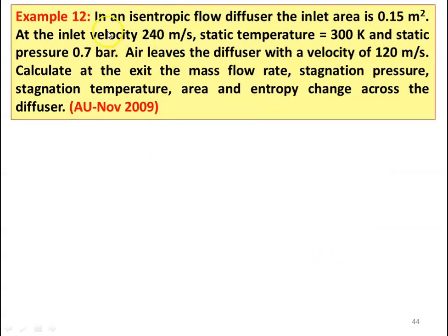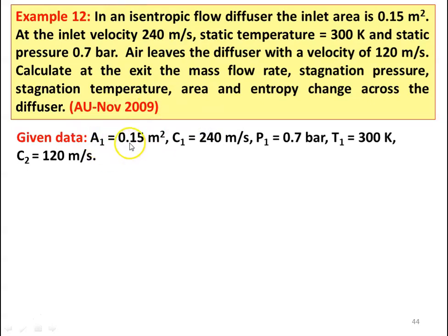Example number 12 from November 2009 question paper. In an isentropic flow diffuser, inlet area is 0.15 meter square. At the inlet, velocity is 240 meters per second, static temperature is 300 Kelvin, and static pressure is 0.7 bar. Air leaves the diffuser with a velocity of 120 meters per second. Calculate the mass flow rate, stagnation pressure, stagnation temperature, exit area, and entropy change across the diffuser. We are given: A1 equal to 0.15 meter square, C1 equal to 240 meters per second, P1 equal to 0.7 bar, and T1 equal to 300 Kelvin. The exit velocity C2 equal to 120 meters per second.